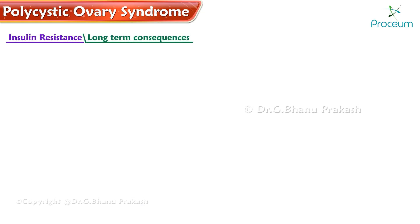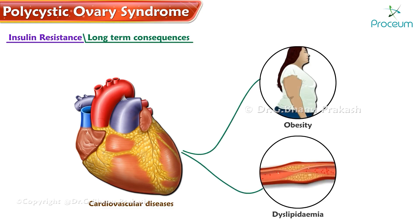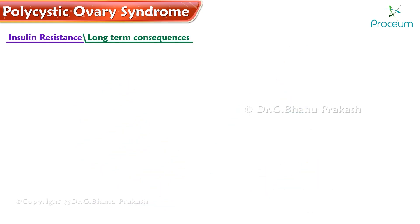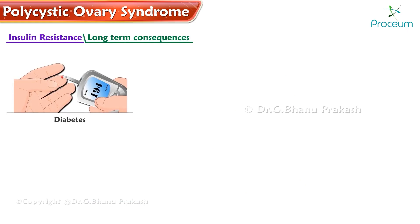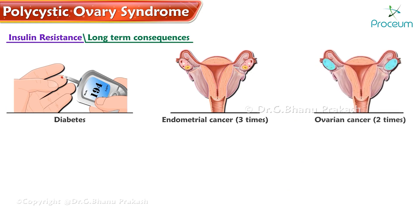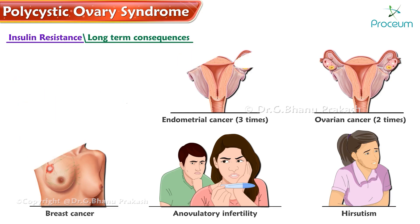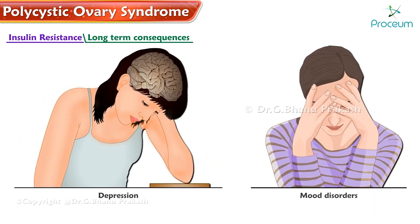Long-term consequences include increased risk for cardiovascular diseases due to obesity and dyslipidemia; increased risk of diabetes; increased risk of endometrial cancer, three times; increased risk of ovarian cancer, two times; increased risk of breast cancer and ovulatory infertility; hirsutism; increased risk of depression and mood disorders; and increased risk of diseases associated with Metabolic X Syndrome.